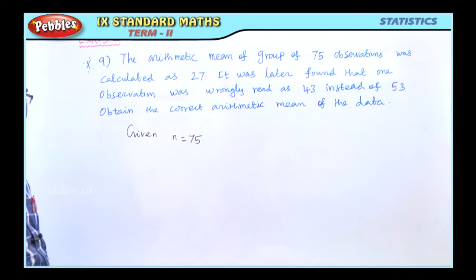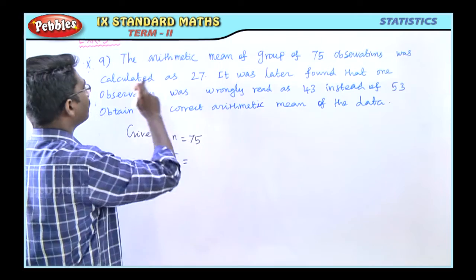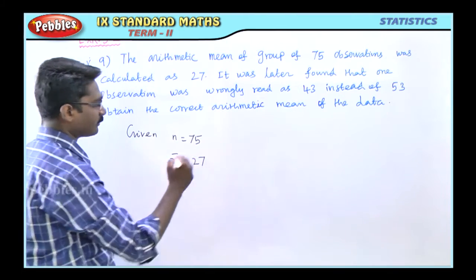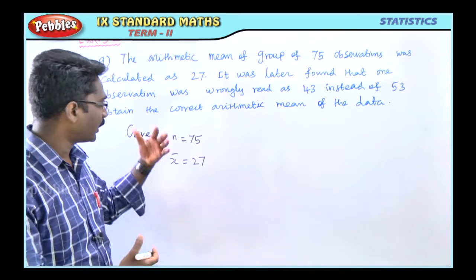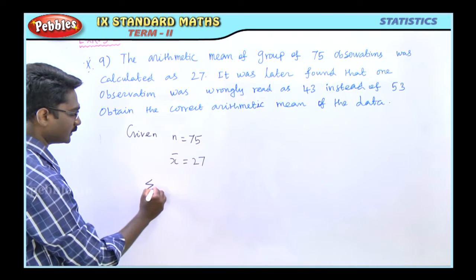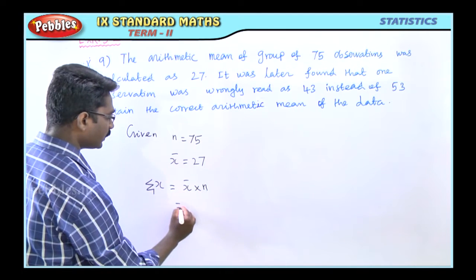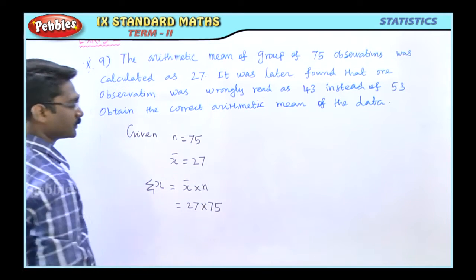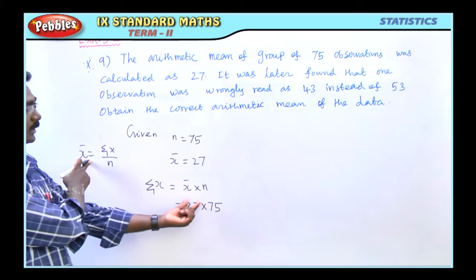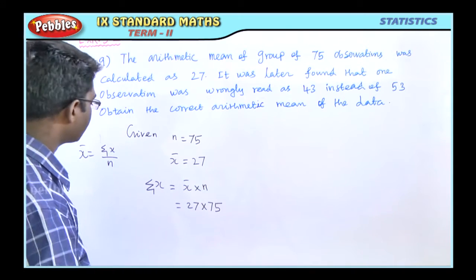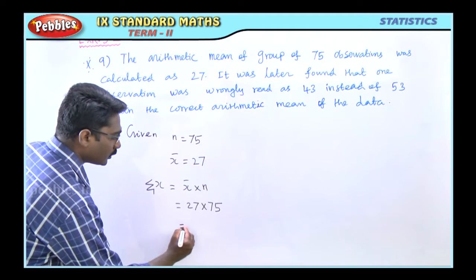So n equals 75. In the case of the arithmetic mean, that is x-bar, calculated as 27. There is a formula: x-bar multiplied by n equals sigma x. So 27 multiplied by 75 gives us sigma x, which equals 2025.